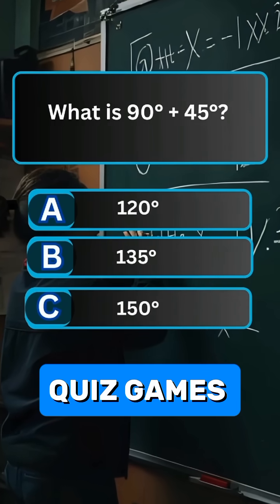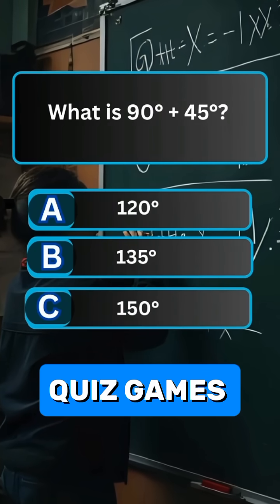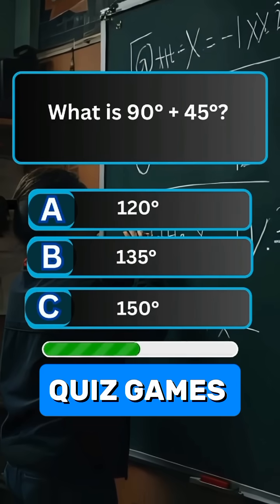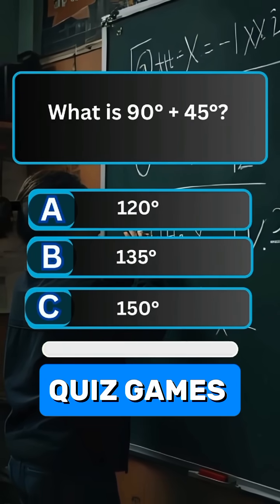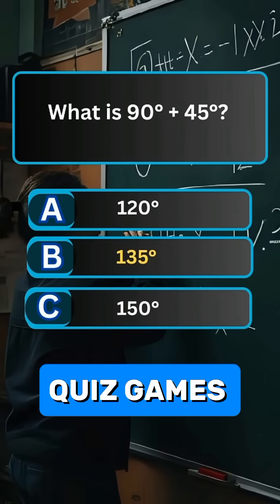Question 8. What is 90 degrees plus 45 degrees? Answer B. 135 degrees.